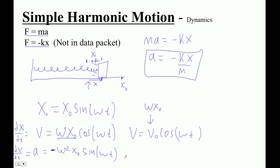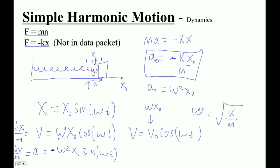There is no formula in the data packet for acceleration. The maximum acceleration from this would be at maximum displacement — our maximum acceleration is just omega squared x-naught. We got one expression from dynamics and one from doing calculus. Check this out: if we get rid of the minus sign, that means omega squared equals k over m. So omega is the square root of k over m. We've talked about this in class.